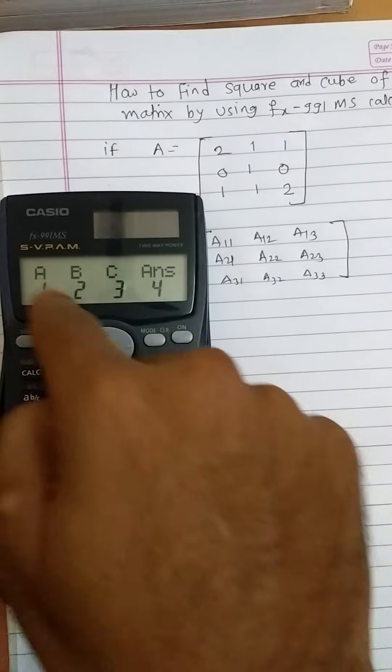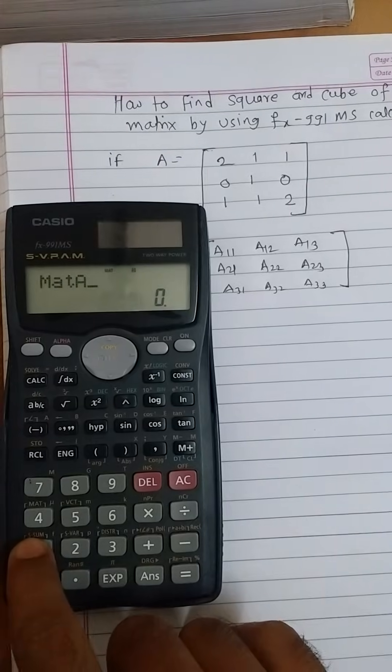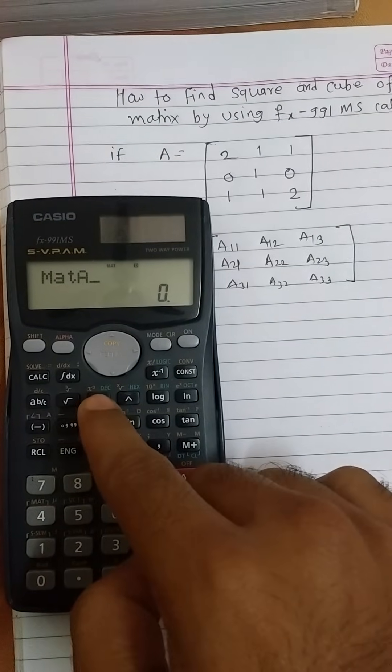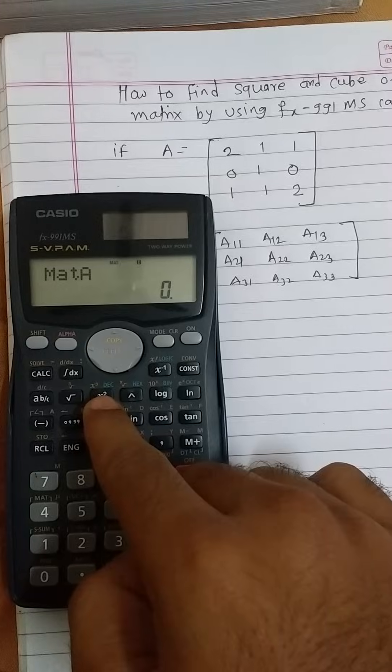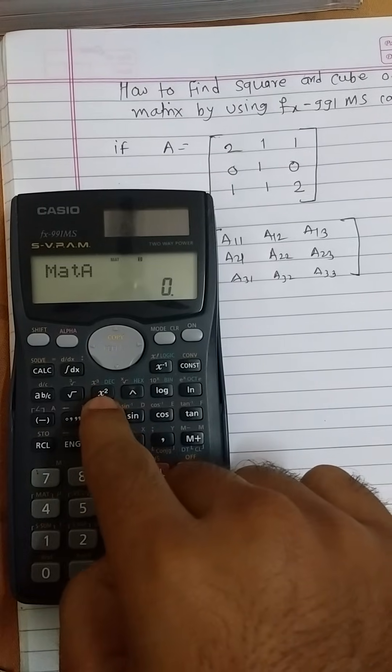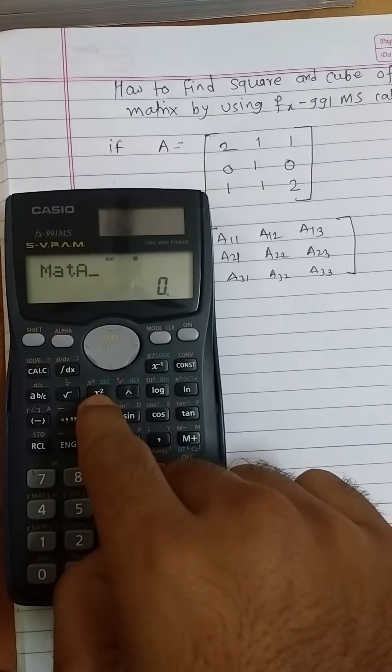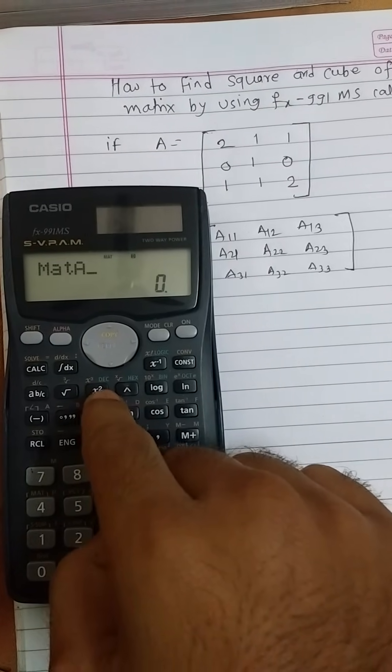Out of these four, press one for matrix A. If we are interested in finding the square of the matrix, then directly press this button X squared. If we are interested in finding the cube of the matrix, then press shift and